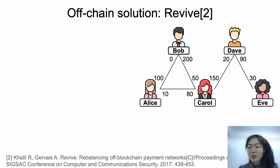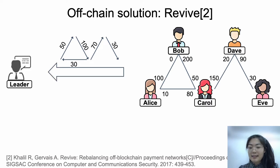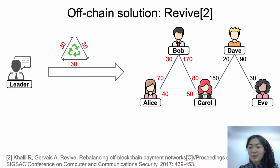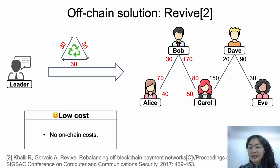For example, in the network structure, Alice wants to shift coins in channel Alice-Bob to channel Alice-Carol. In other words, Alice expects to send coins in channel Alice-Bob and receive coins in channel Alice-Carol. Other users also have rebalancing demands. They send their demands to the leader. The leader checks which demands could be rebalanced. To guarantee that users won't lose coins, their demands should form directed cycles, and the rebalanced amount is the minimum along the cycle. In this figure, only Alice, Bob, and Carol could be rebalanced, and the rebalanced amount is 30. Then the leader generates the rebalancing transactions and sends them to users. Users check that they won't lose coins in the rebalancing transactions, then cooperate to complete the rebalancing. Revive is cost-free since it is performed off the blockchain.